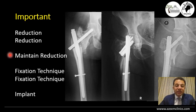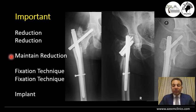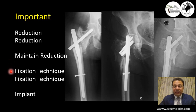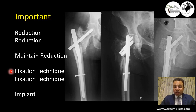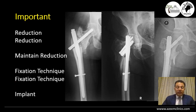Not only reduction, but maintaining the reduction — because maintaining reduction in these fractures is very difficult. You must maintain your achieved proper reduction during the fixation technique. The fixation technique itself, if done improperly, may be a cause for displacement of the fracture. That's what happens when you reduce your fracture properly and after fixation you are surprised that it has displaced. So it's a matter of fixation technique, and finally the choice of implant comes last.